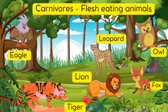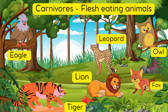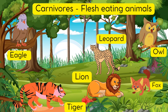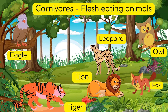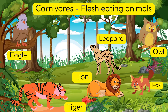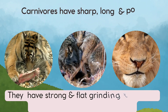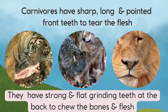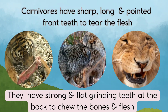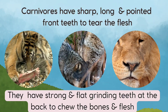Now let's learn about carnivores, or flesh-eating animals. Examples of carnivore animals are lion, tiger, leopard, fox, and birds like eagle, owl and vulture. Carnivores have sharp, long and pointed front teeth to tear the flesh. They have strong and flat grinding teeth at the back to chew the bones and flesh.